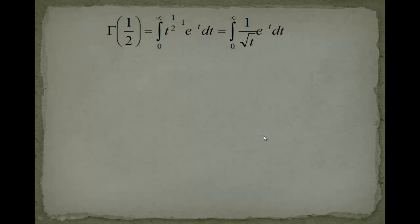We will use the definition of the gamma function, which says gamma of 1 half is equal to the integral from 0 to infinity for t, normally we had here an s, now this is 1 half minus 1, which will give you a minus 1 half, which will be equal to 1 over the square root of t multiplied with e to the minus t dt.